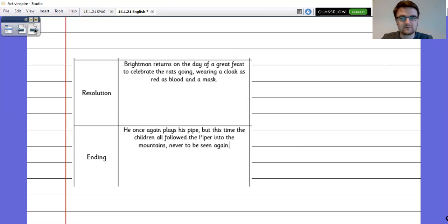Now for the other two parts and this is what we're going to be writing tomorrow. Brightman returns on the day of a great feast to celebrate the rats going, wearing a cloak as red as blood and a mask. So he's changed his attire there in the resolution and the ending. He once again plays his pipe but this time the children will follow the pipe into the mountains never to be seen again. So again a couple of changes to make there.